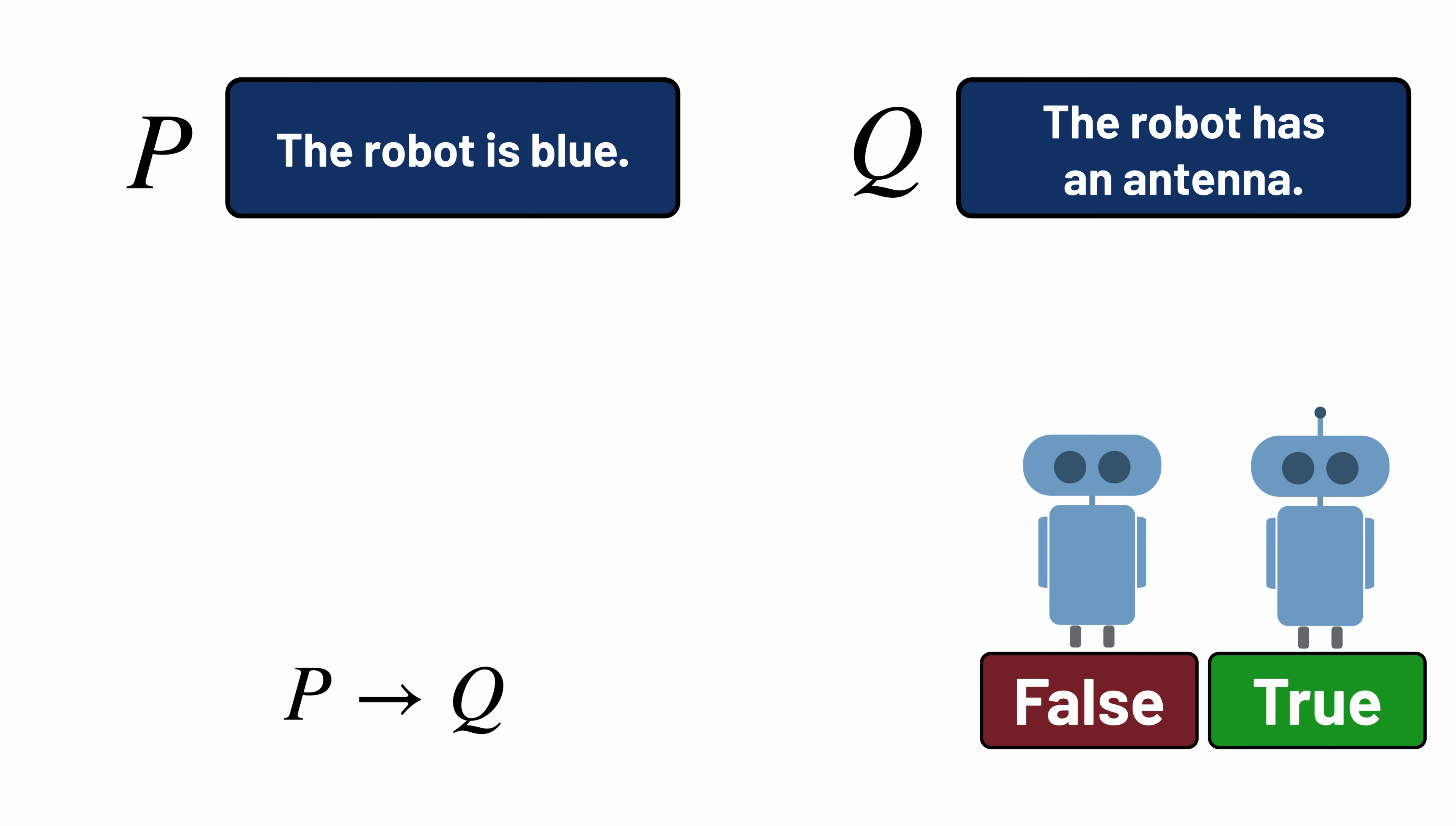Importantly, P implies Q says nothing about what the world must be like if P is false. If P is false, in other words, if the robot isn't blue, then the formula isn't saying anything about whether Q is true or not. Maybe the robot has an antenna, maybe it doesn't. In either case, P implies Q is true.